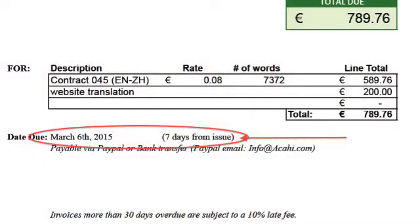Under all this you will have the due date. I generally write one of two things: either 'payable upon receipt,' which means pay as soon as you receive it, or 'pay within seven days,' which gives a precise date — so if today is the 10th, it's due on the 17th. Very often clients want something paid within 15 or 30 days; if that's the case, write whatever you've agreed upon, just to make it very clear.